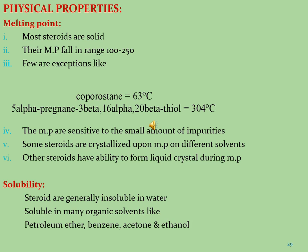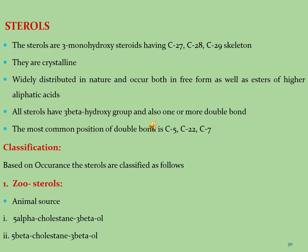Regarding solubility, steroids are generally soluble in organic solvents and insoluble in water. The organic solvents used for solubility of steroidal compounds are petroleum ether, benzene, acetone, and ethanol. Sterols are steroidal molecules in which a hydroxyl group is present at the carbon-3 position, generally consisting of carbon-27 to carbon-30 base skeletons. Sterols are mono-hydroxy steroids having C27, C28, C29, and C30 base skeletons. They are crystalline in nature, widely distributed in nature, and occur both in free form and as esters of higher aliphatic acids. All sterols have a 3β-hydroxy group and also one or more double bonds, with the most common positions of double bonds at carbon-5, carbon-22, and carbon-7.